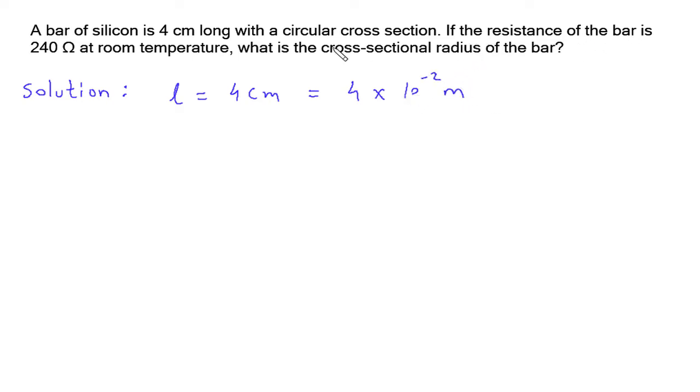The resistance of the bar is 240 Ohm, so R equals 240 Ohm. What is the cross sectional radius of the bar? We have to find the radius r.